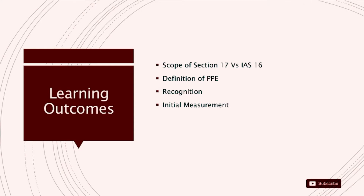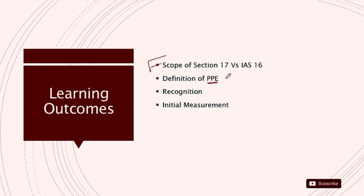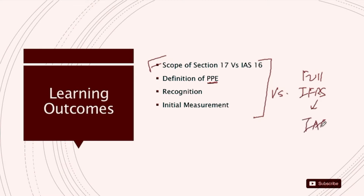After completing this video, you will have an understanding about the following 4 areas. First, we will understand the scope of IFRS for SMEs in respect of Property, Plant and Equipment. Then we will understand the definition of PP&E and how it is different from full IFRS — that is IAS 16. We will also go through the recognition criteria and understand the initial measurement of PP&E when we record it for the first time.